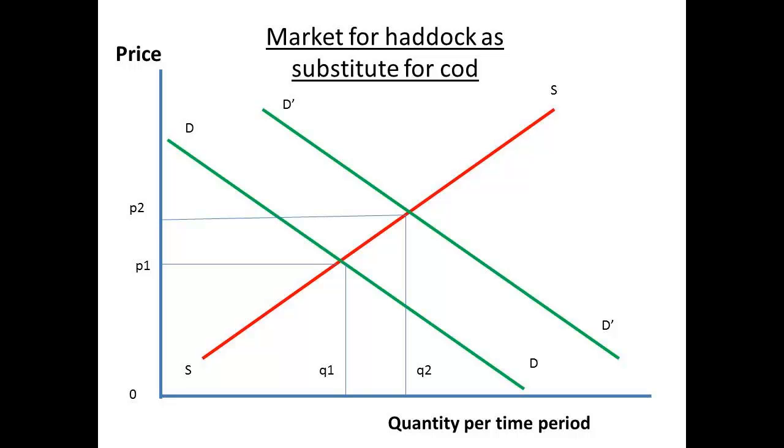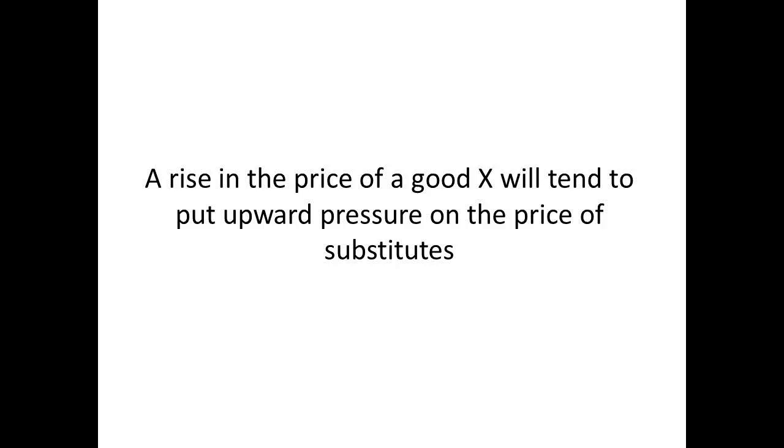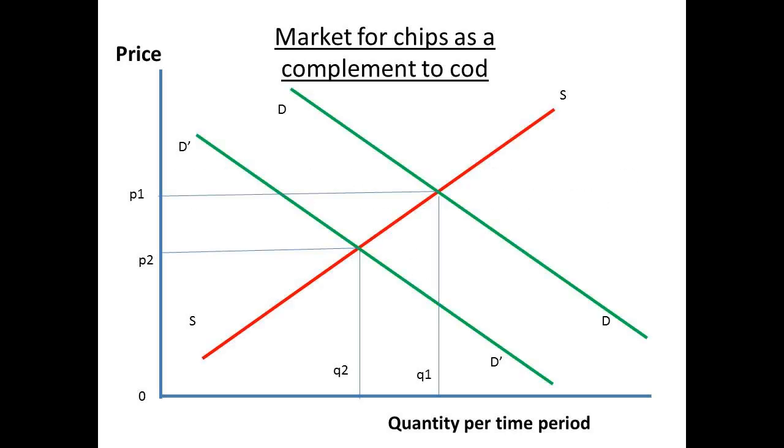Before the shift in the supply of cod, there was an equilibrium set at price P1 with quantity Q1 being supplied. The shift in demand to D1D1 sets a new equilibrium at price P2 and quantity Q2. The price has been driven upwards. The result of an increase in the price of good X will exert an upward pressure on the price of substitutes for X.